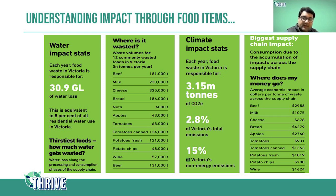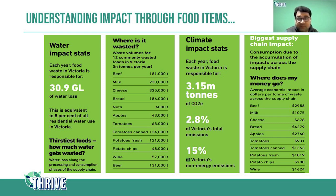This slide shows the food items that contribute to the maximum food wastage. We waste around 31 gigalitres of water, equivalent to 8% of all residential water use in Victoria. The climate impact shows that 3.5 million tons of CO2 equivalent is released as greenhouse gas emissions, which is almost 2.8% of Victoria's total emissions. These figures are quantified by food item.